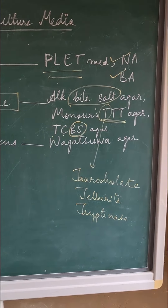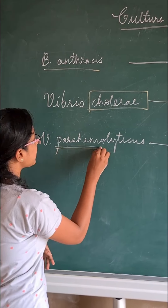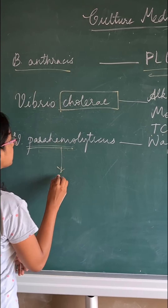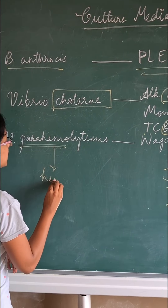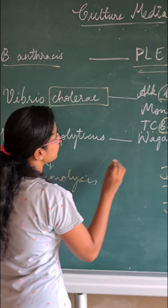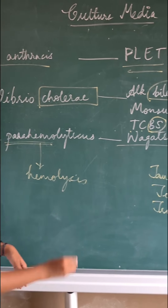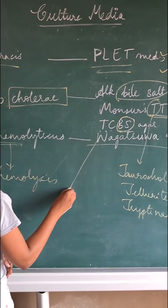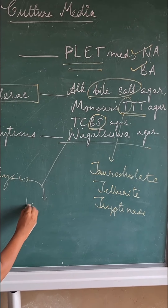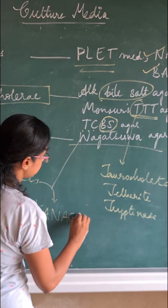For Vibrio parahemolyticus: it causes hemolysis on Wagatsuma agar, and this hemolysis on Wagatsuma agar is called the Kanagawa phenomenon.